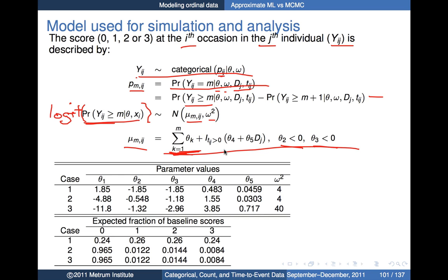On the right we have the possibility of a sort of instant placebo effect. The indicator I(T_ij > 0) is zero at baseline and one for any post-baseline values. For any post-baseline values there'll be an immediate change introduced even for the placebo treatment, via theta 4. Then there's a linear dose effect on the logit of our probabilities via theta 5 times dose.